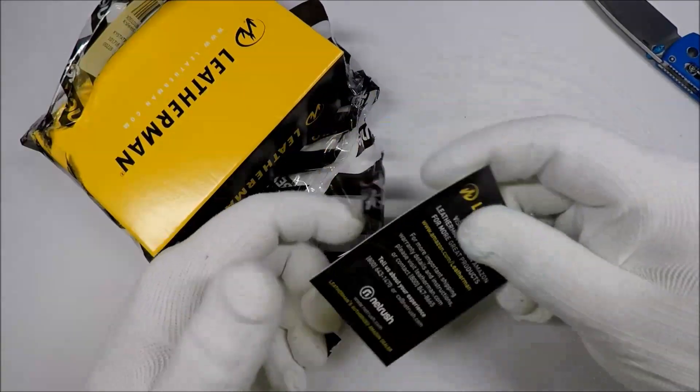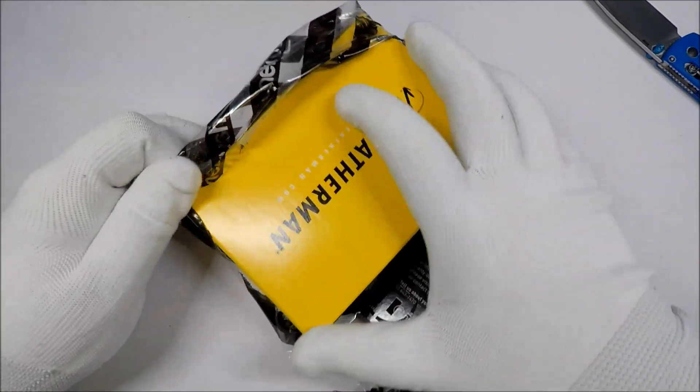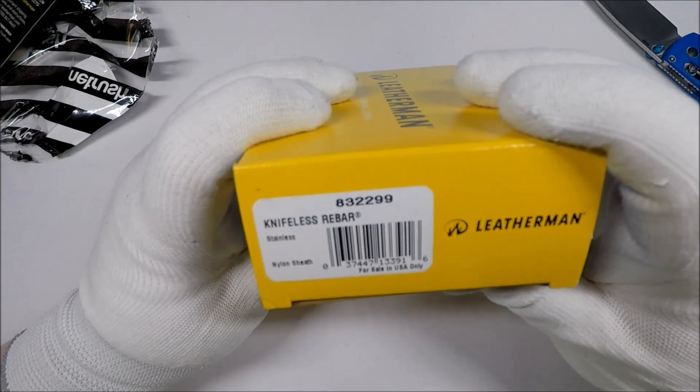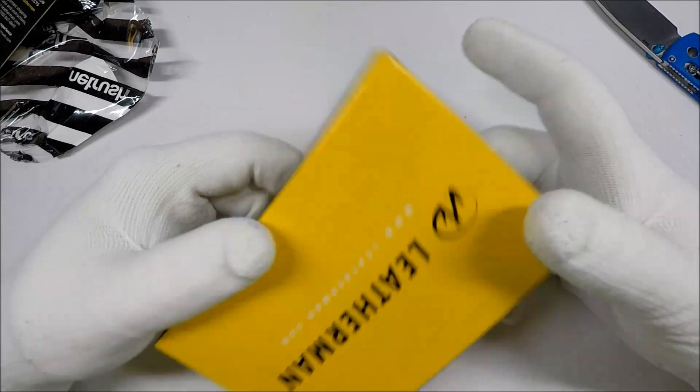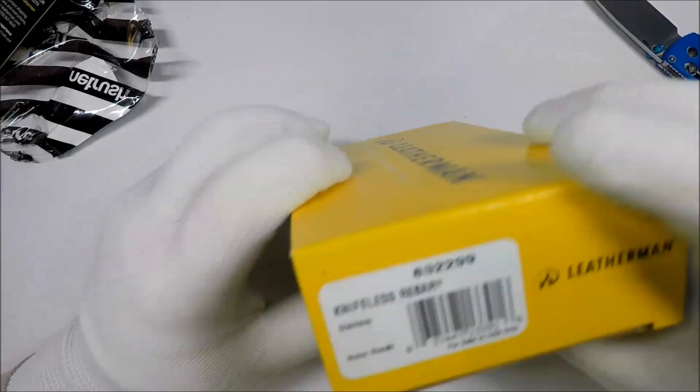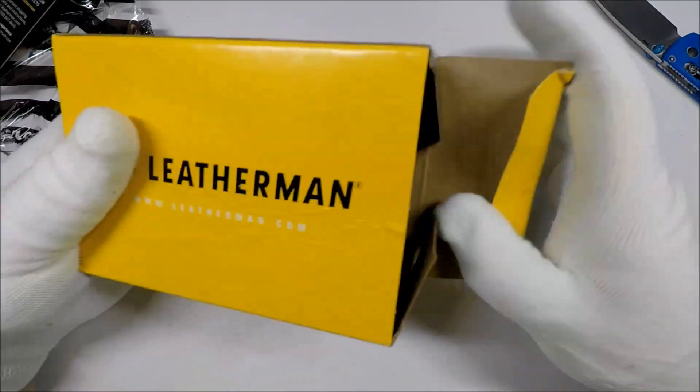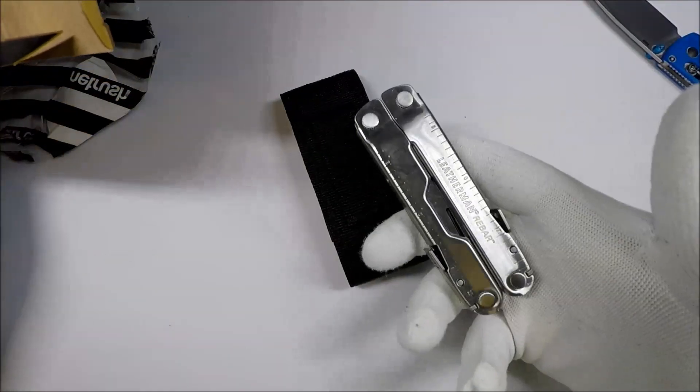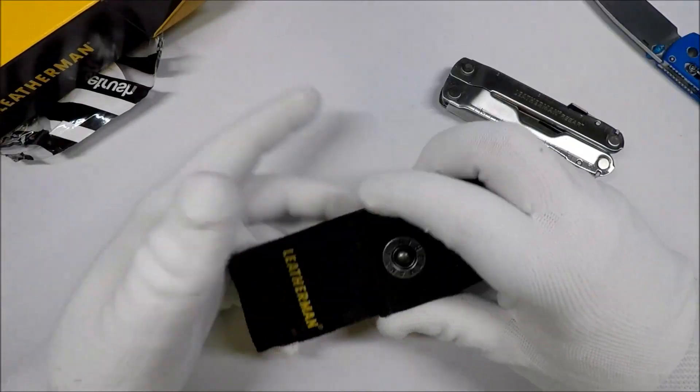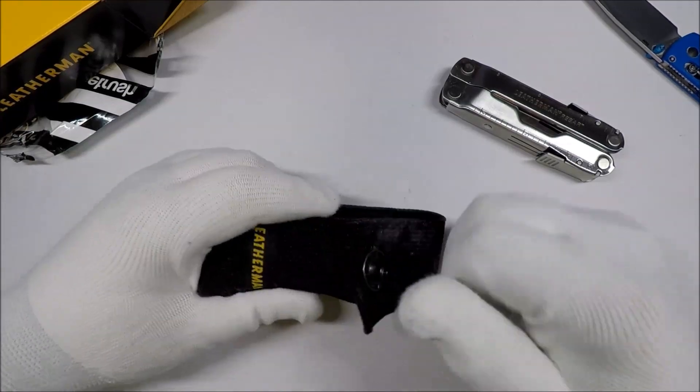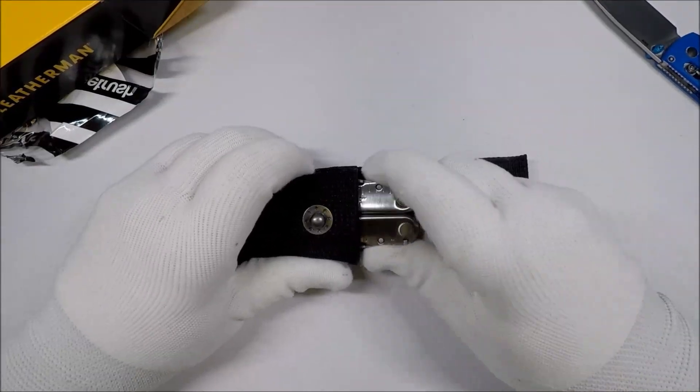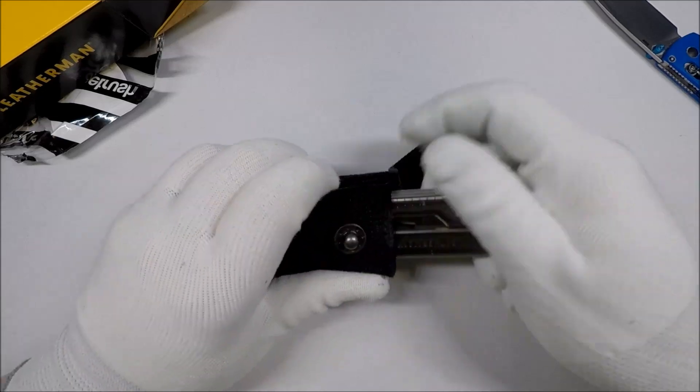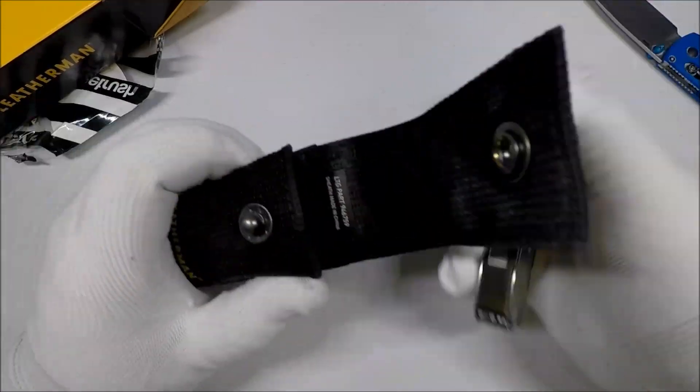You got the Leatherman 25 year guarantee thing and then we have the rebar. There's a nylon sheath, for sale in the USA only. I'm pretty sure all of them is made in the US. Let's take a look at this thing. We got the rebar and we got the nylon sheath. This seems like a pretty standard Leatherman nylon sheath. You're supposed to slide it in this way. It comes with a nylon sheath which is kind of nifty.